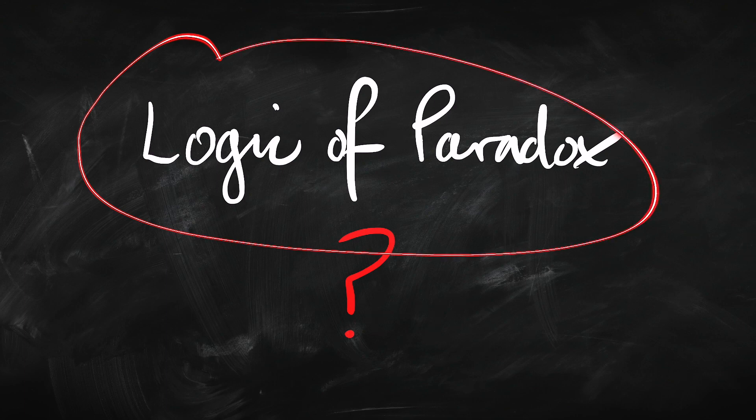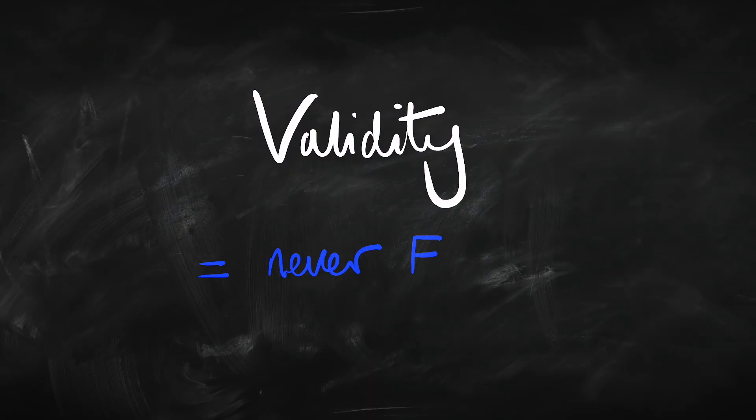Now let's come on to the logic of paradox. This is going to be a little bit different. Here, we're not just going to change how we treat implication — in fact we're going to do it in the Strong Kleene way. What we're going to change is what we count as being valid. Classically, a valid sentence is one that is always true, or equivalently one that can never be false — in classical logic those mean the same thing. But when we've got three values they come apart: a sentence might not always be true even though it's never going to be false. So there are two different criteria. In the logic of paradox, we take a sentence to be valid when it can't ever be false — it always avoids being false.